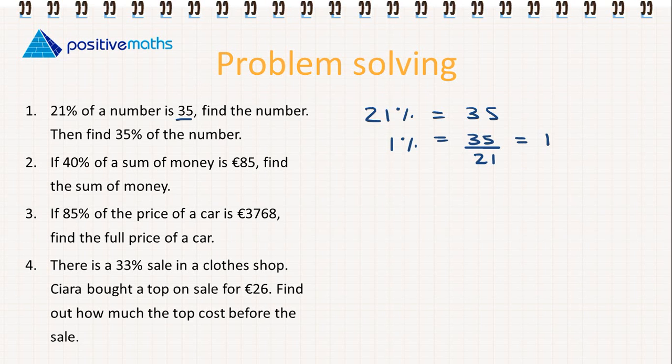This will give us 1.667 when we round it to three places. Then 100% is going to be equal to 1.667 multiplied by 100, and we will get 166.7. So that's our first example.